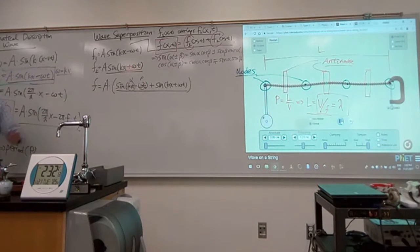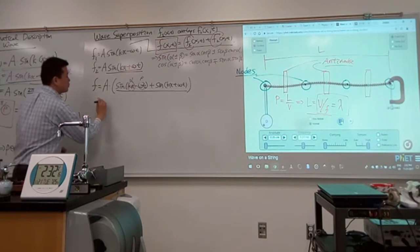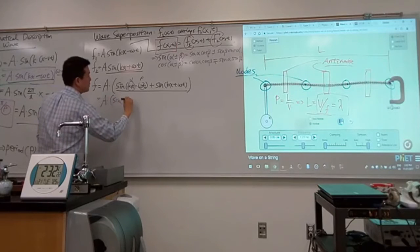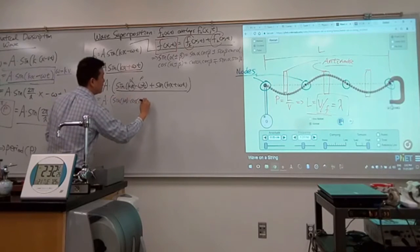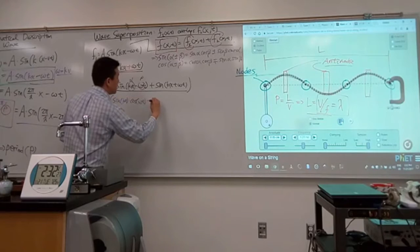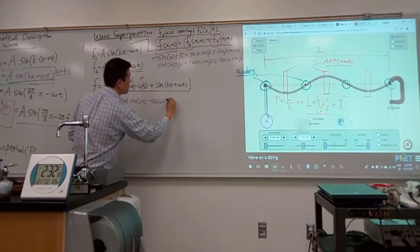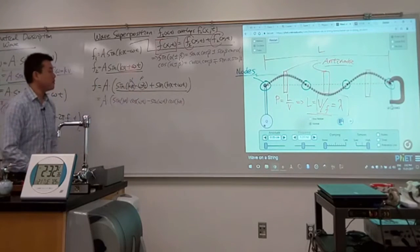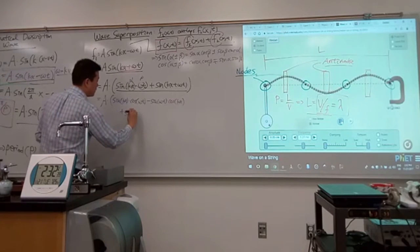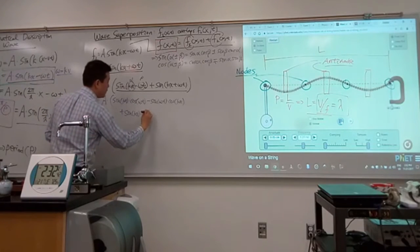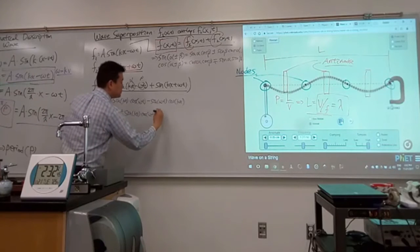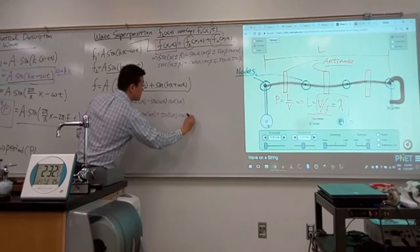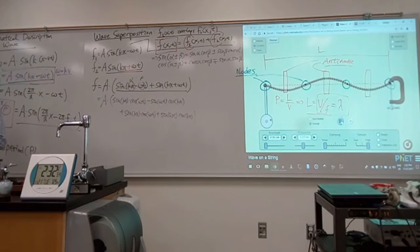So the combined function is equal to a times, let me rewrite this, sine of kx times cosine of omega t minus sine of omega t times cosine of kx. That seems complicated. Let me write down the second one. So plus sine of kx times cosine of omega t plus sine of omega t times cosine of kx. And this is where you see something magical happen. You see these two complicated terms canceling each other out.